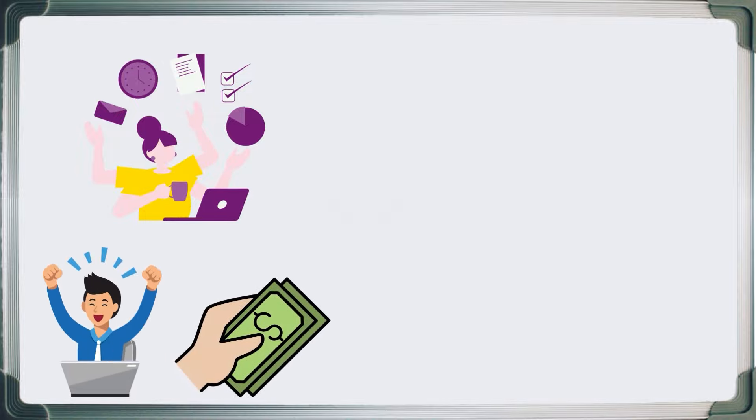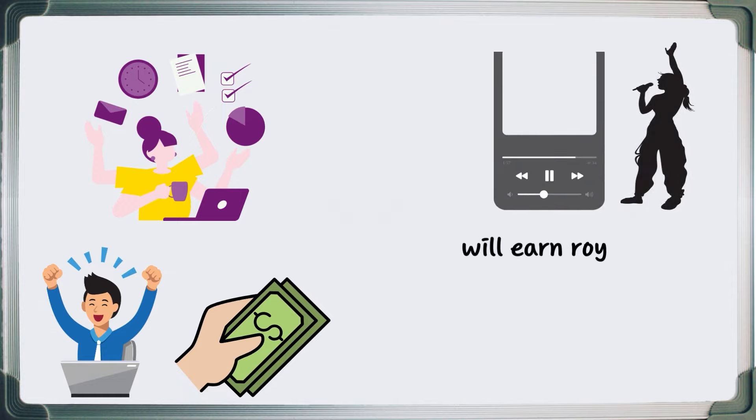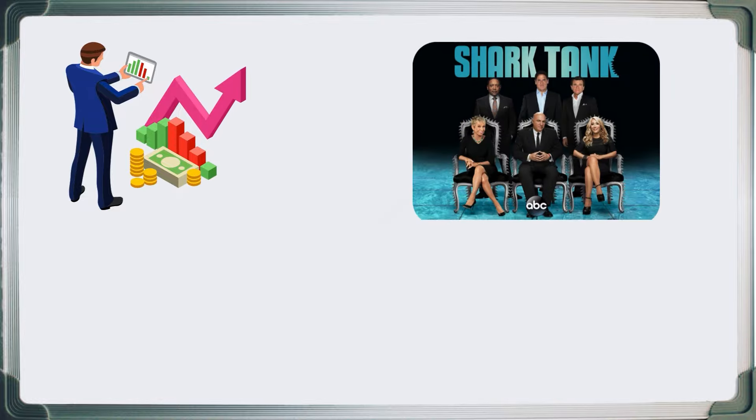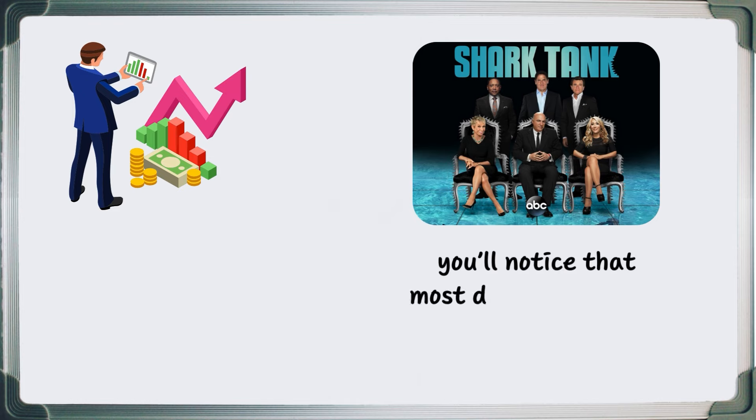For example, an artist whose music is played on Spotify will earn royalties at the end of a specified period, based on the number of times their music is played. Venture capitalists also earn through this channel. If you watch Shark Tank or other business pitch shows, you'll notice that most deals end with a royalty fee on each product sold.